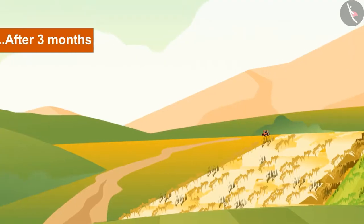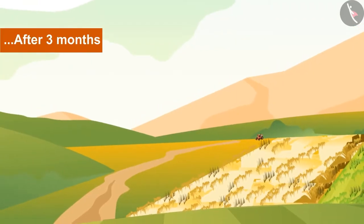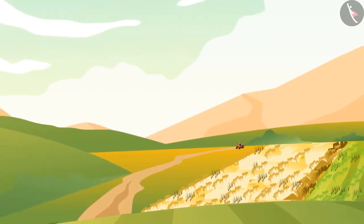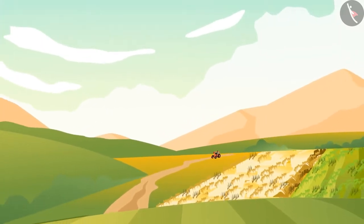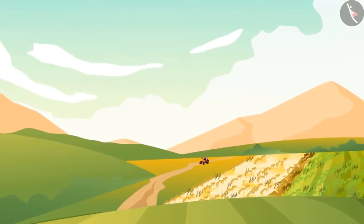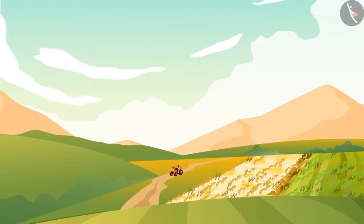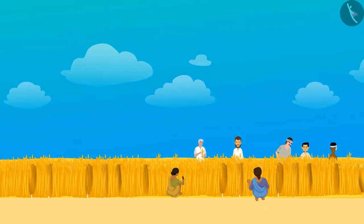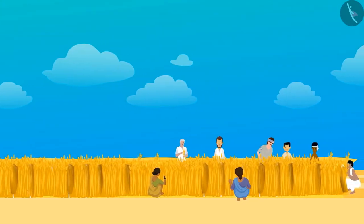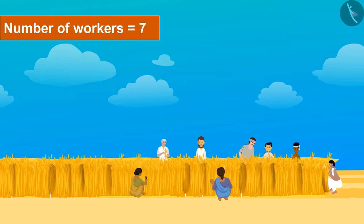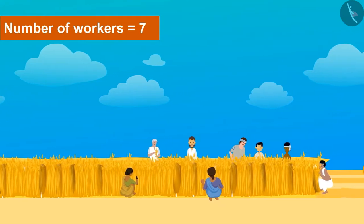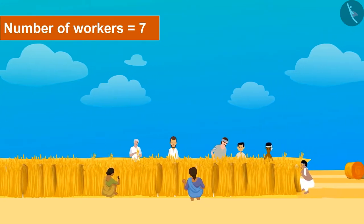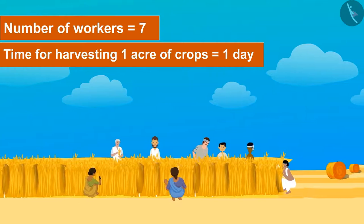After three months, see how the pulses crop of Karim is booming, although it's still time for the wheat crop to get ready for harvest. Karim called workers to help him harvest the pulses, and together they harvested one acre of crops in a day.